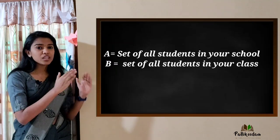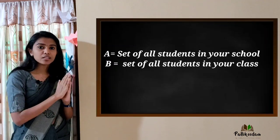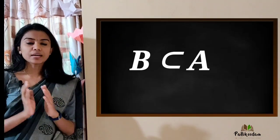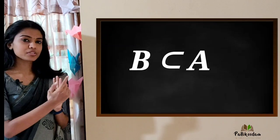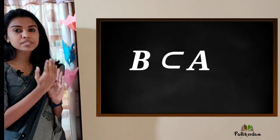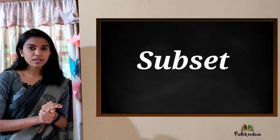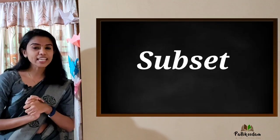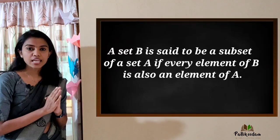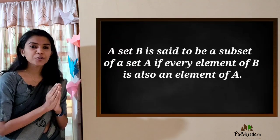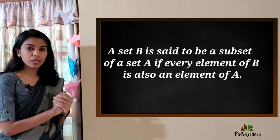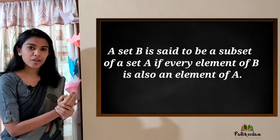B is a simple part of A. That is, B is a subset of A. Now we have to state the definition of a subset. If B is said to be the subset of A, then every element of B must be an element of A.